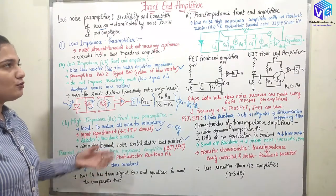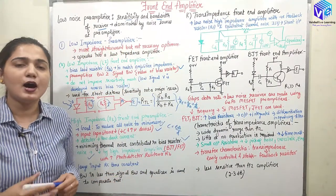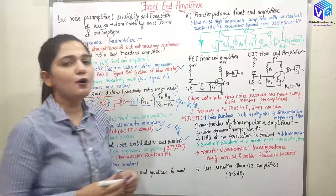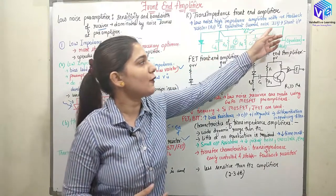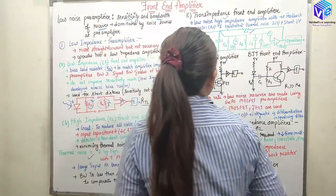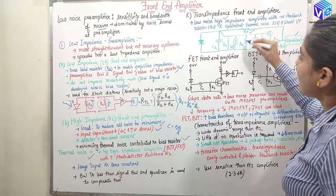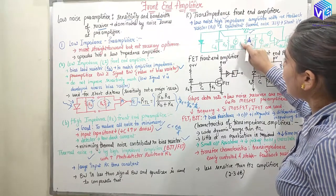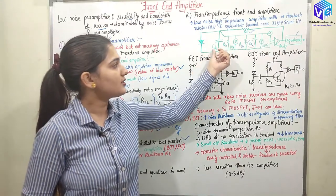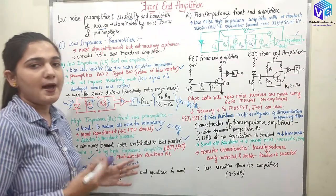Because of the bandwidth issue, we move to the trans-impedance front-end amplifier. This is a low-noise high-impedance amplifier structure created with the help of a negative feedback resistor. We use the negative feedback resistor, and the equivalent thermal noise current IT shunts the input. The structure includes: the amplifier, an equalizer, IDT, CD, RD, CA, RA, and RB — where RB is the bias resistance, CD is the capacitance associated with the pre-amplifier, RF is the negative feedback resistance, and RA and CA are the input resistance and capacitance of the amplifier.